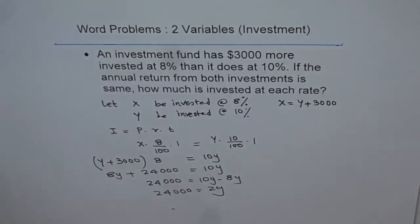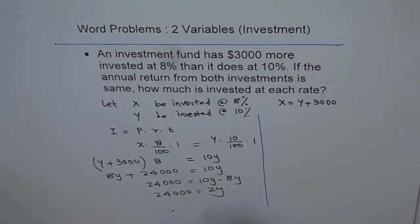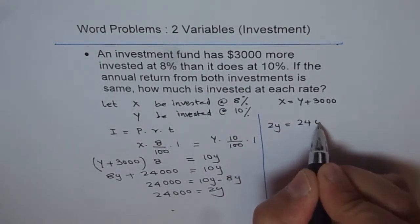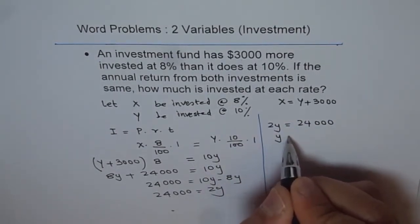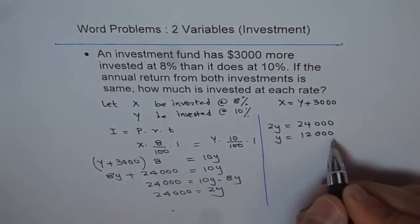And from here, we can write our answer. So our answer is, we have 2Y equals 24,000, or Y divided by 2 is 12,000. So that is the value of Y.